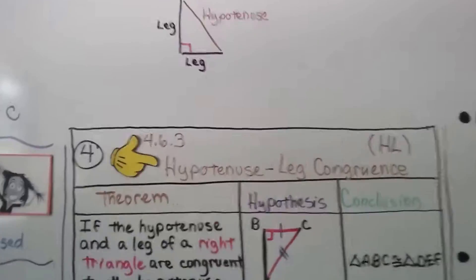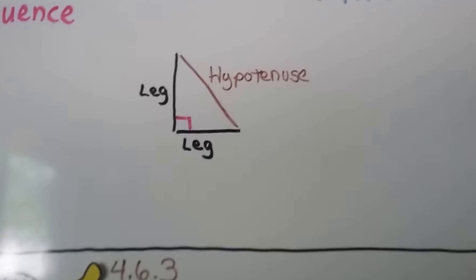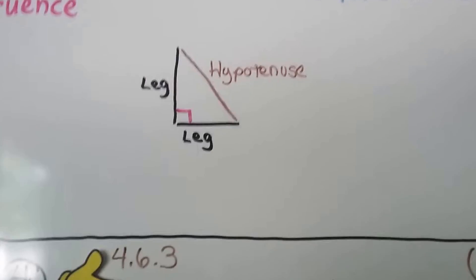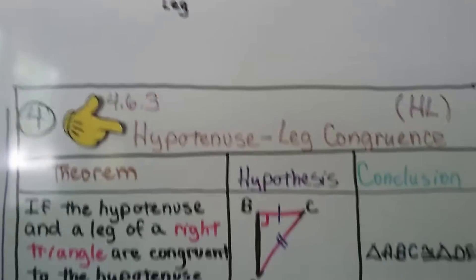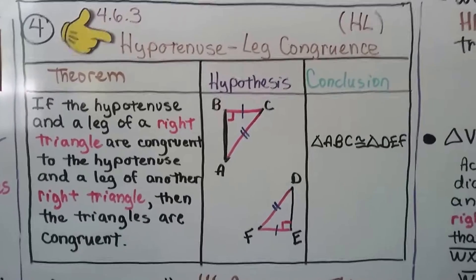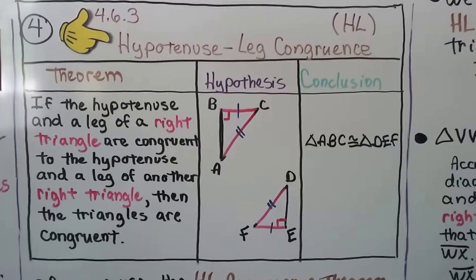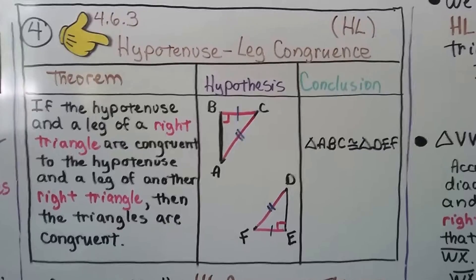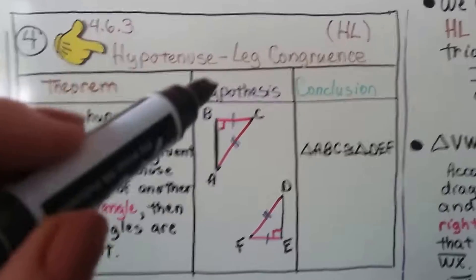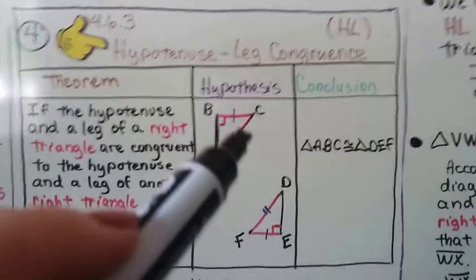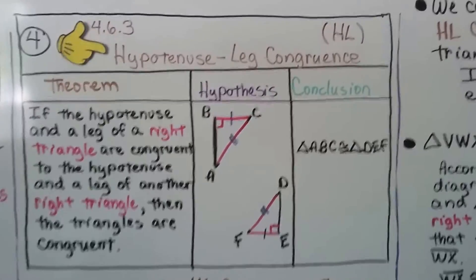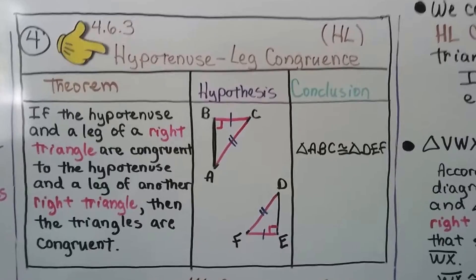For a right triangle, we have a leg, a leg, and a hypotenuse — that's the long side. The theorem says if the hypotenuse and a leg of a right triangle are congruent to the hypotenuse and a leg of another right triangle, then the triangles are congruent. We can look at the diagrams: we have a leg that's congruent to a leg and a hypotenuse that's congruent to a hypotenuse, so our conclusion is that triangle ABC is congruent to triangle DEF.